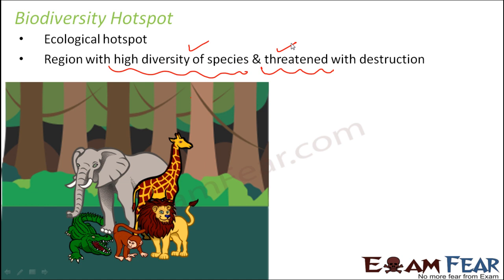Biodiversity means diversity of living organisms. A biodiversity hotspot needs a lot of attention because the organisms in that area are threatened. When we say threatened, it means those organisms are endangered — that is, they can become extinct. There is a high possibility that those organisms, whether plant or animal, can become extinct due to several reasons.